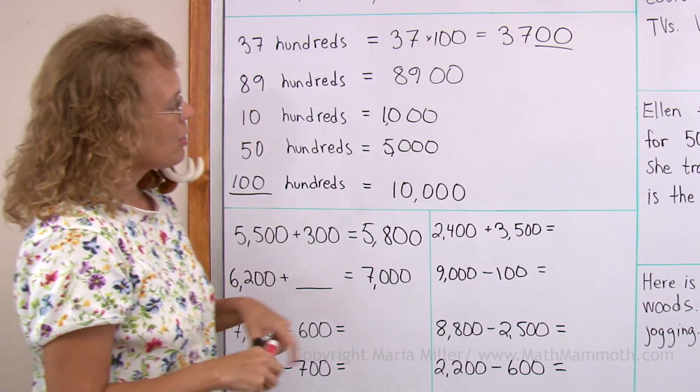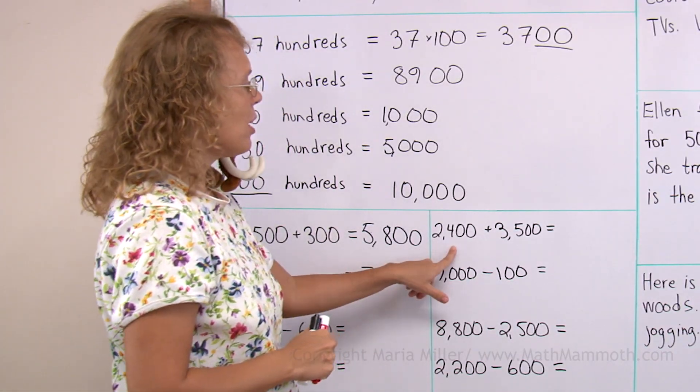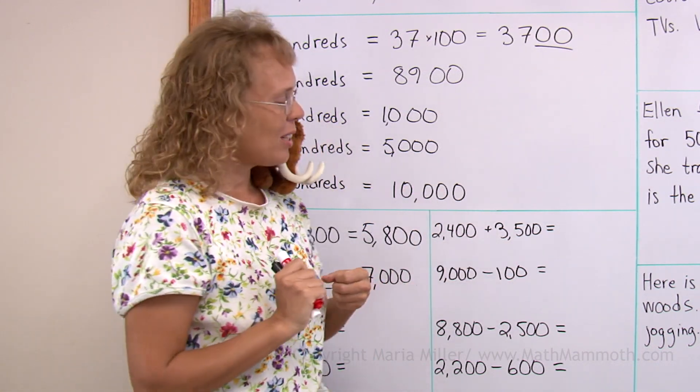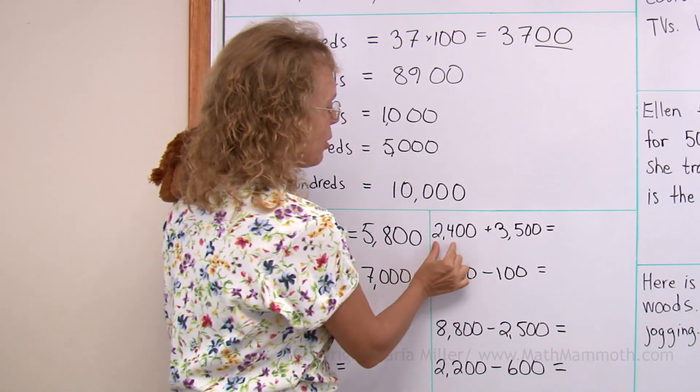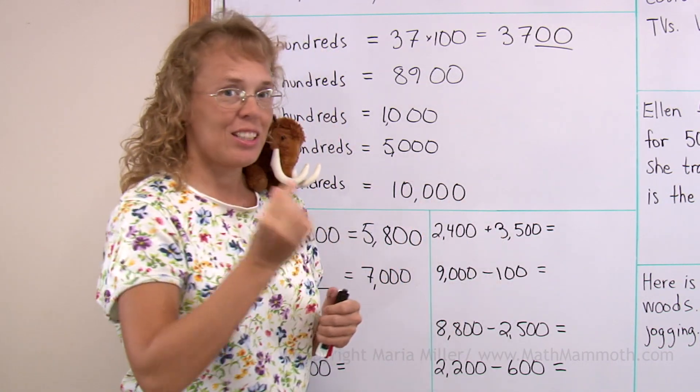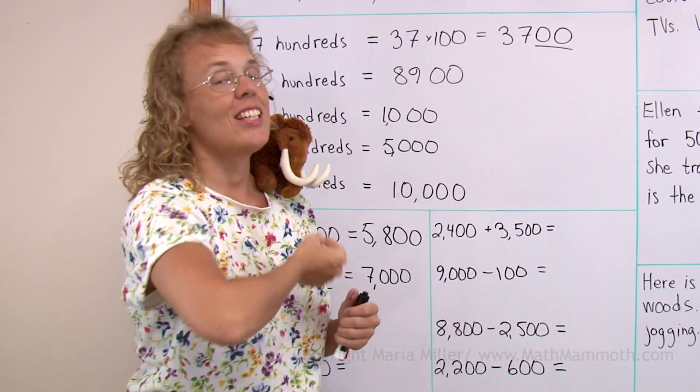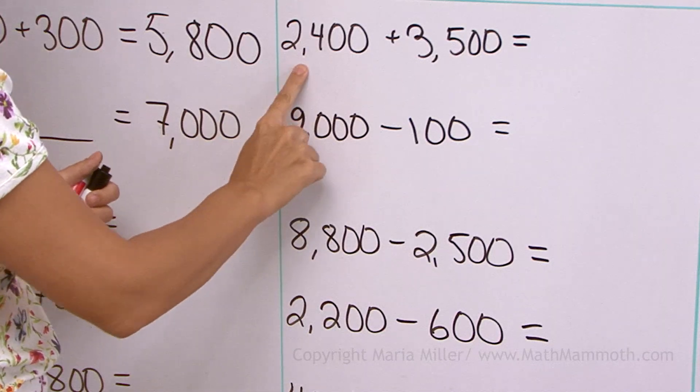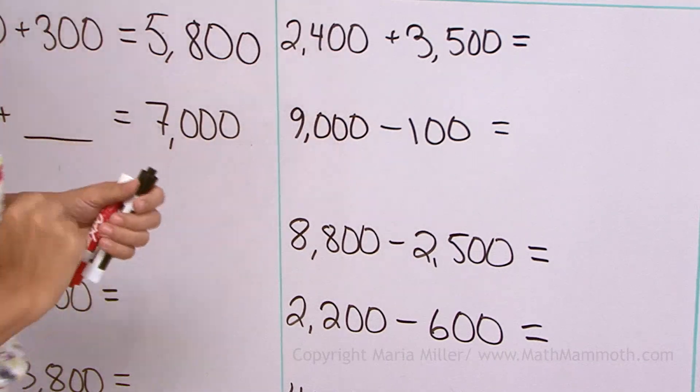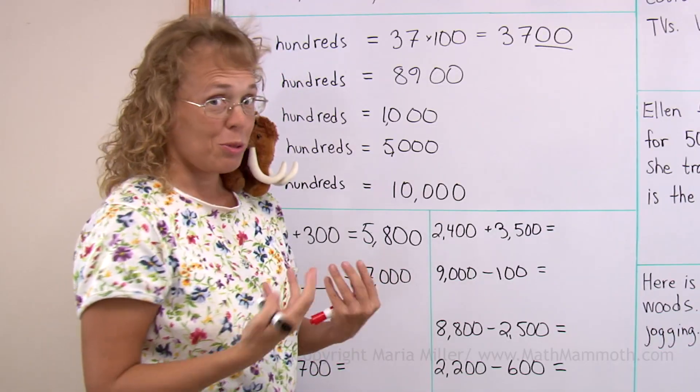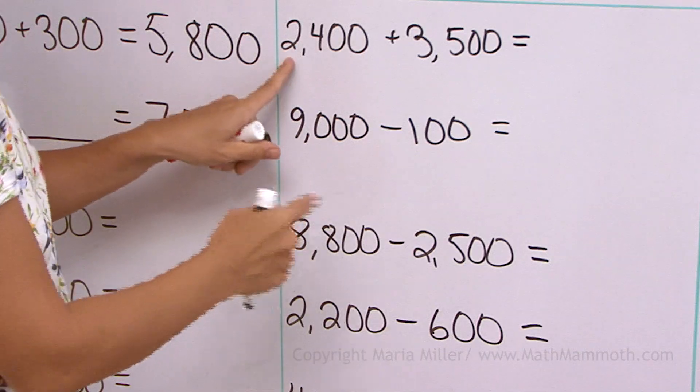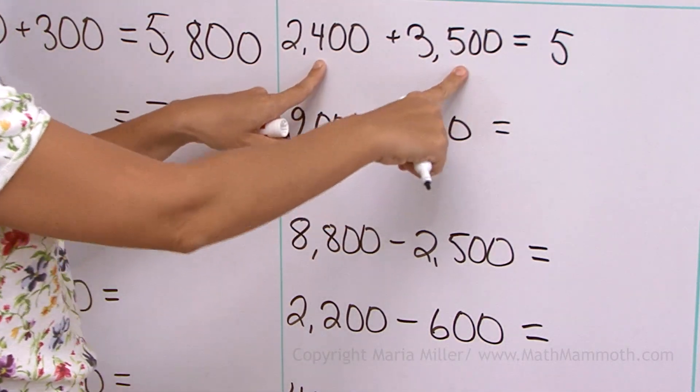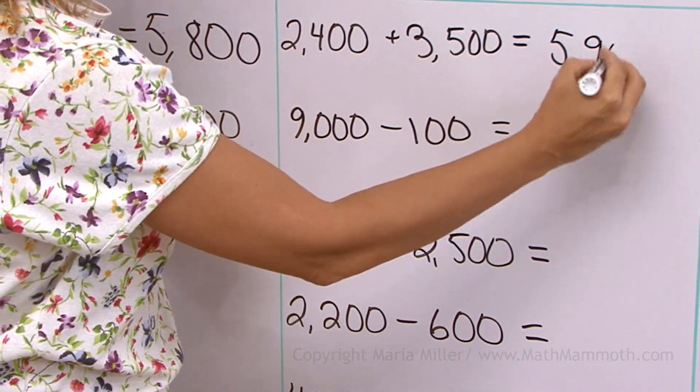But then, for example here, 2400 plus 3500. I can add the thousands and hundreds. Or I can think of it as 24 and 35 and add 24 and 35 and then tag two zeros till the end of it. Because this is 2400, this is 3500. But anyway, two ways to do it. If I add the thousands, I get 5000. And then I add the hundreds to get 900.